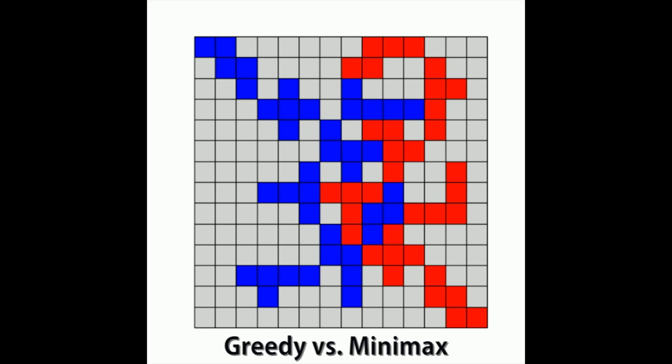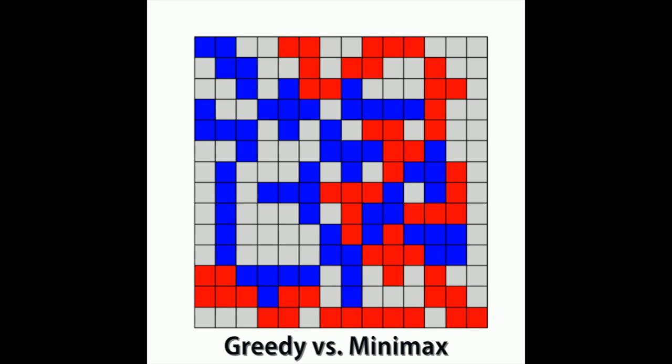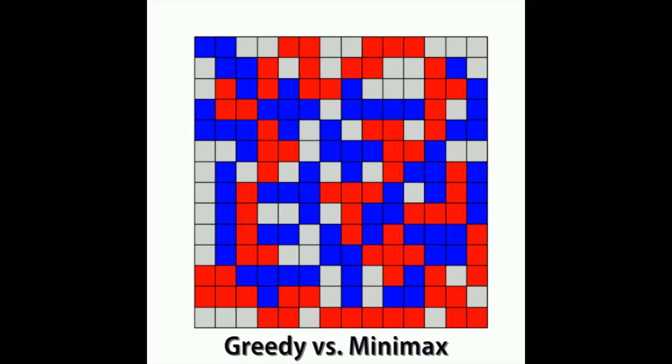Minimax beats both greedy players even when it goes second, but not by much since it's only looking one move ahead. This is especially interesting because our Minimax player can only correctly predict its opponent's move if it has the same weightings for maximizing size and corners.